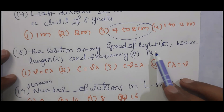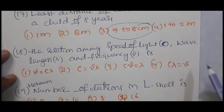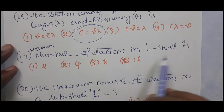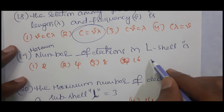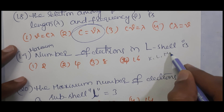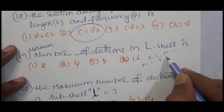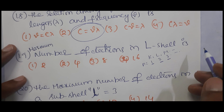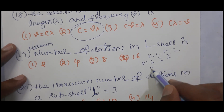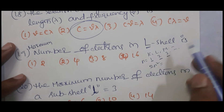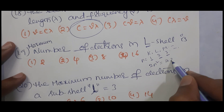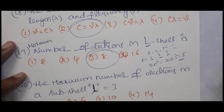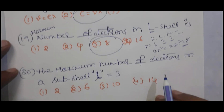Question 18: The relation between speed of light c, wavelength λ, and frequency ν is c = νλ. Next: number of electrons in the L shell. Shells are denoted K, L, M with n = 1, 2, 3. Maximum electrons in a shell = 2n². For L shell, n = 2, so maximum electrons = 2×2² = 8.